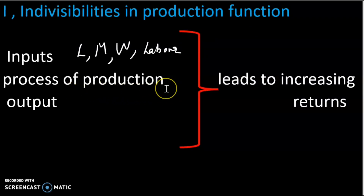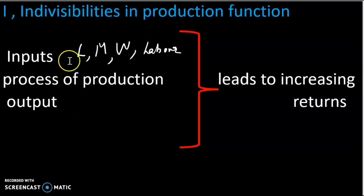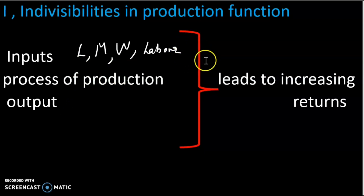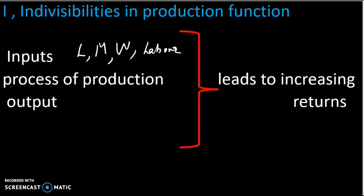In the process of production with indivisibility, there is a minimum of efficient methods. The economy needs increasing returns. Indivisibility in production function means production cannot be scaled down indefinitely — it requires a threshold level of inputs to be efficient.